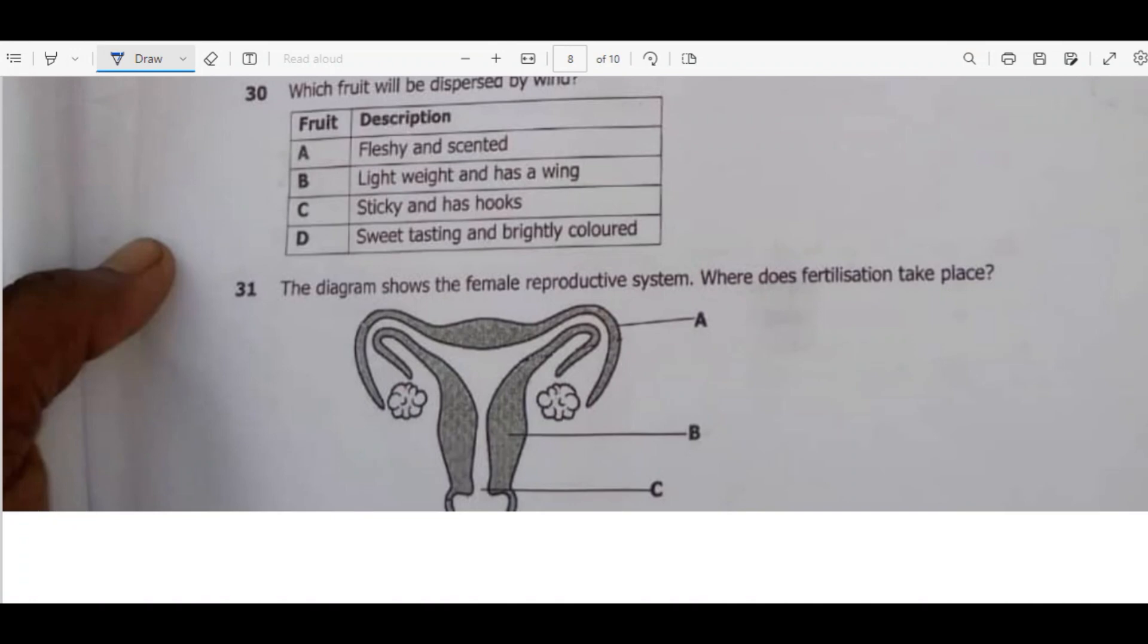Question 30. Which fruit will be dispersed by wind? Number one, it has to be light so that it is able to float in the air. Number two, must have a wing-like structure. So we are going with B.